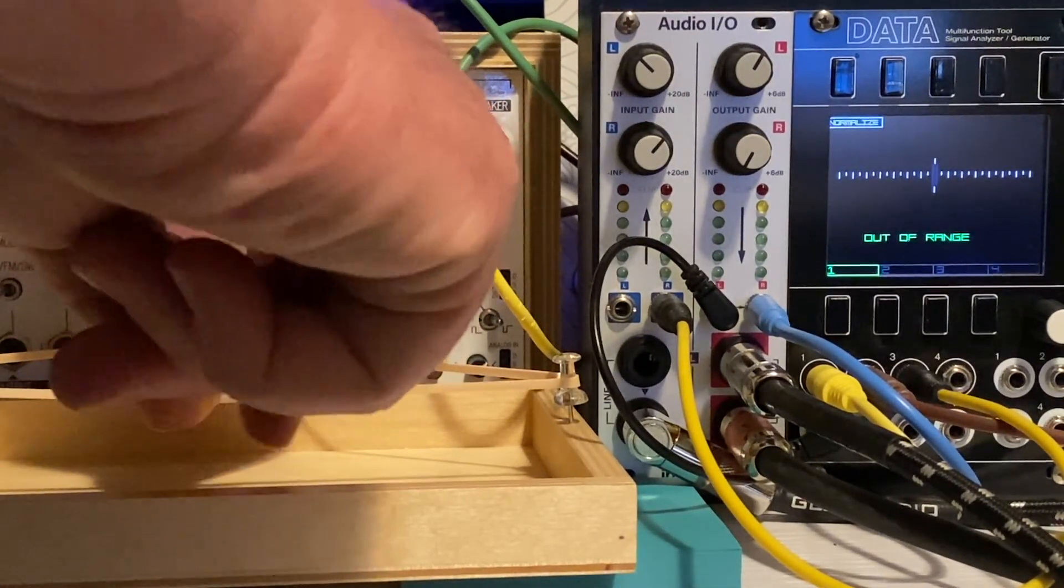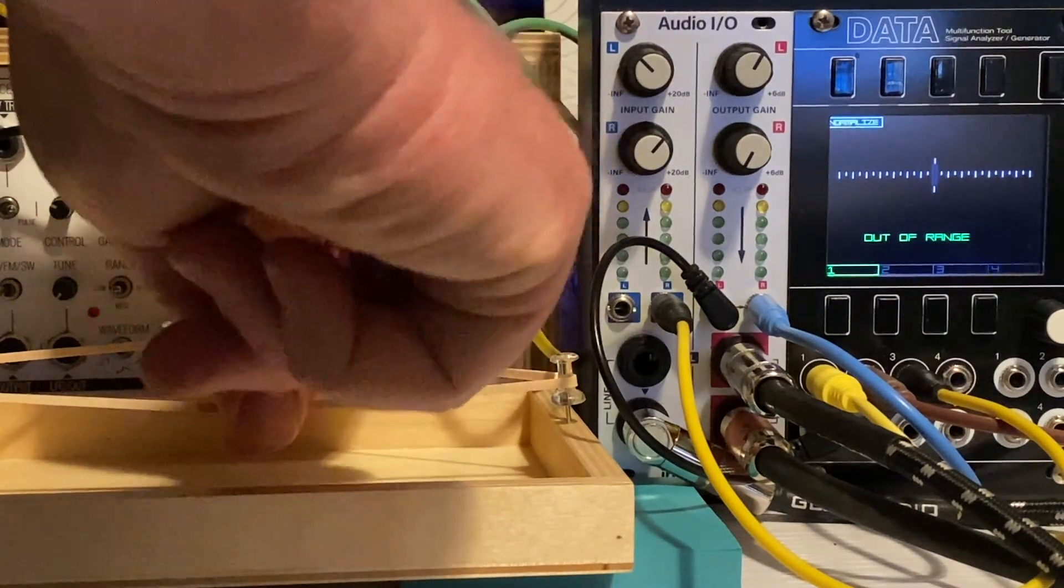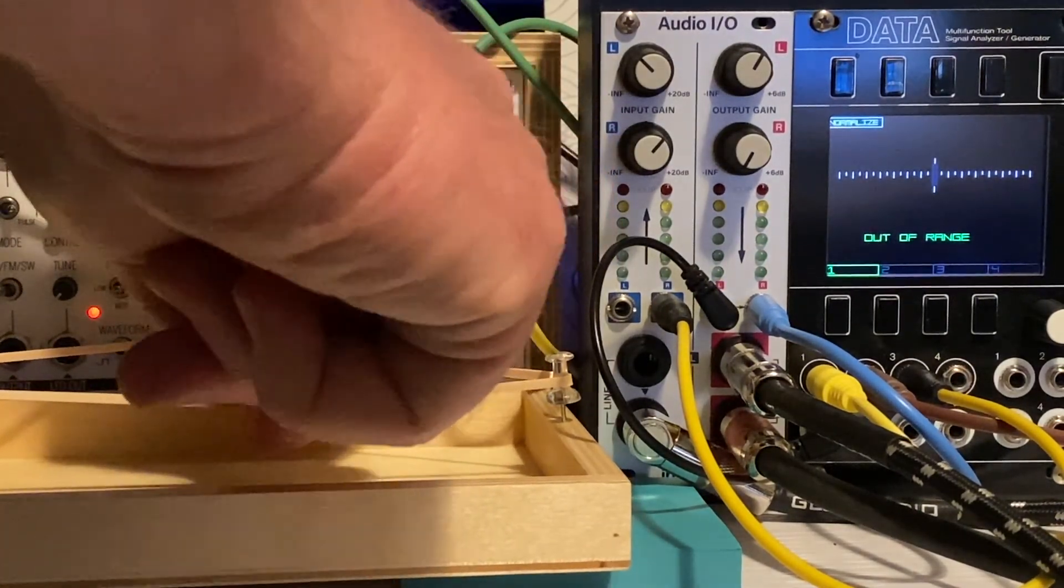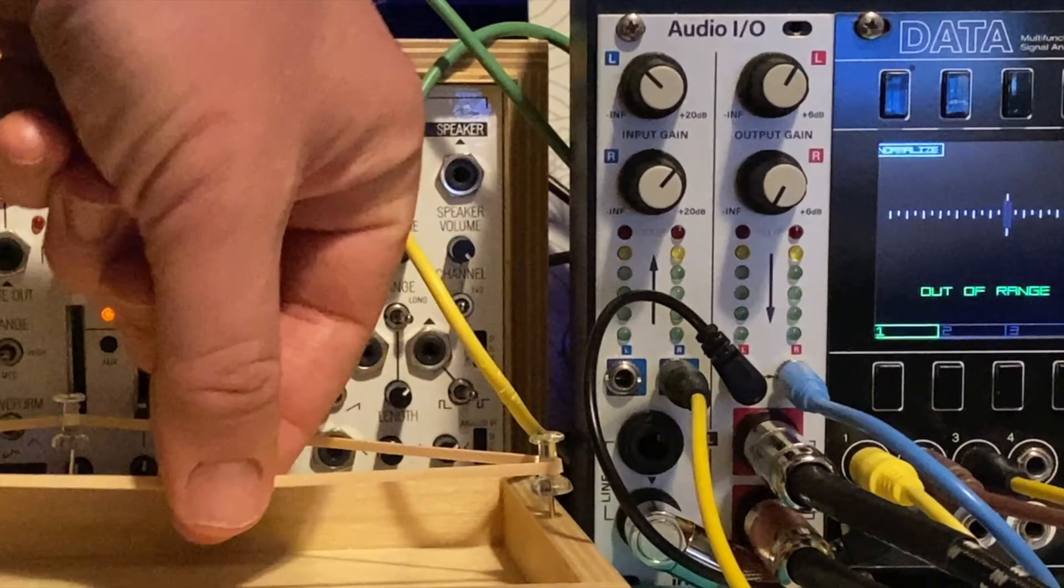If I hold down the string a third of the way between the posts and strum the shorter side, I get an even higher note. This small section is vibrating three times as fast as the uncut string, but it is very difficult to discern the pitch, so I'm going to use our knowledge of the octave to help.